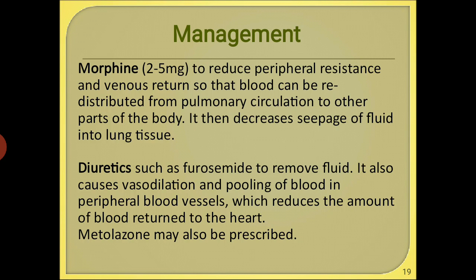For medications, morphine 2–5 mg is given, which will reduce peripheral resistance and venous return, allowing blood to be redistributed from the pulmonary circulation to other parts of the body, decreasing leaking of fluid from the blood vessels into the lungs.